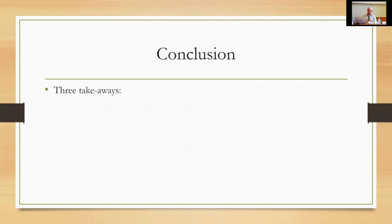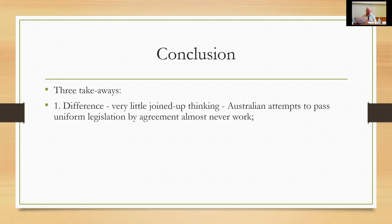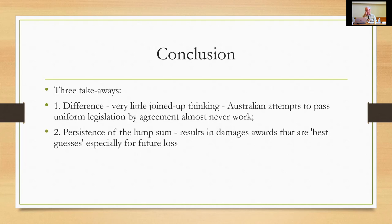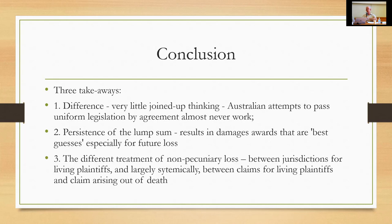Three takeaways from the Australian system: first, difference — there is very little joined-up thinking, and Australian attempts to pass uniform legislation by agreement almost never work, quickly diverging into different systems. Second, the persistence of the lump sum, resulting in damages awards that are best guesses when it comes to future loss. Third, the different treatment of non-pecuniary loss — not just between jurisdictions for living plaintiffs, but also systemically between claims for living plaintiffs and claims arising out of death. Thank you very much — happy to answer questions.